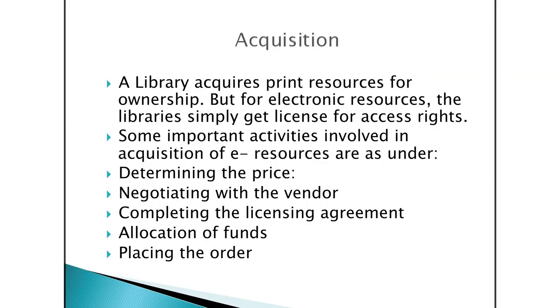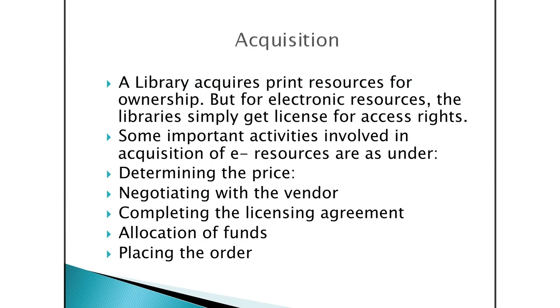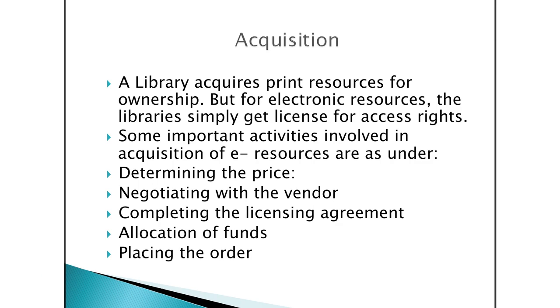Then comes acquisition. A library requires print resources for ownership, but for electronic resources the libraries simply get a license for access rights. Some important activities involved in acquisition of e-resources are determining the price, negotiating with the vendor, completing the license agreement, allocation of funds, placing the order, verifying if the title is accessible, communicating with the vendor if it is not accessible, and processing the invoice for payment.